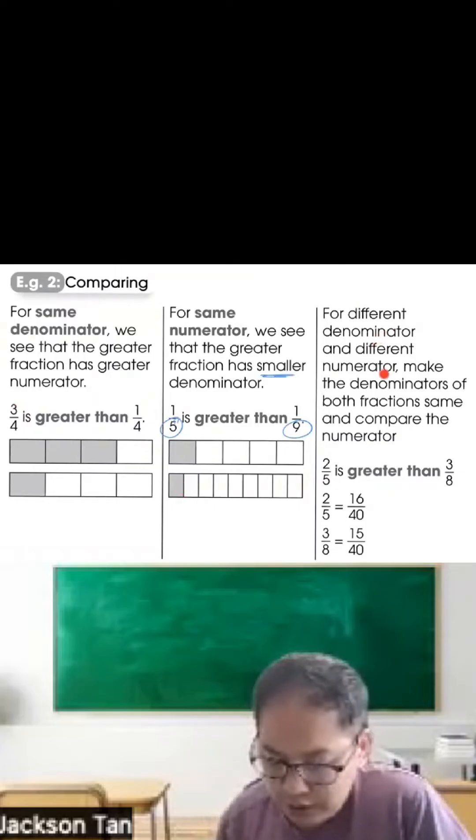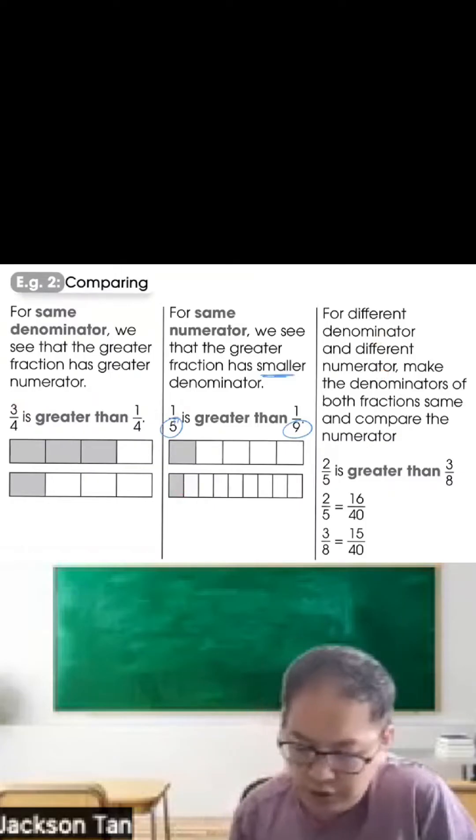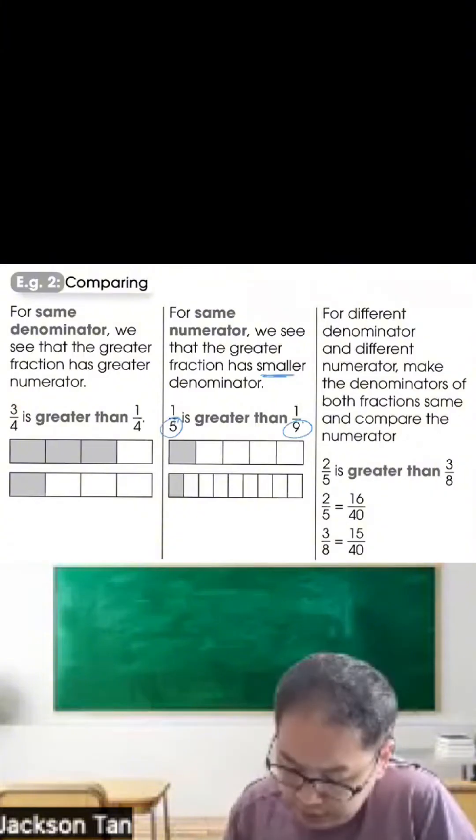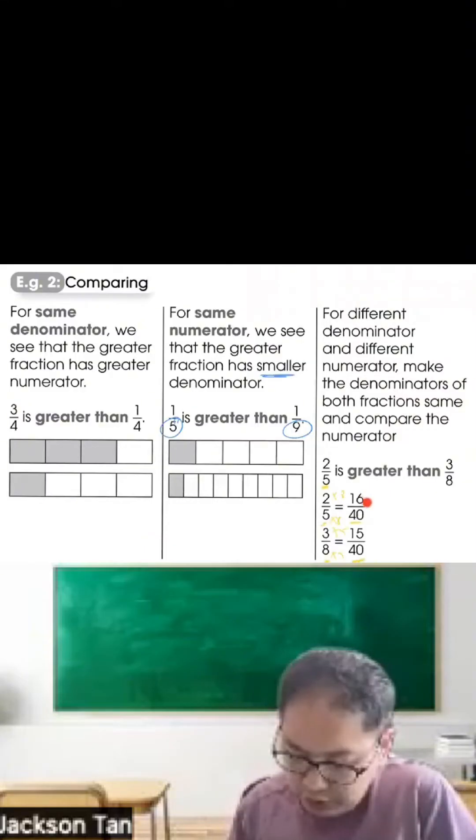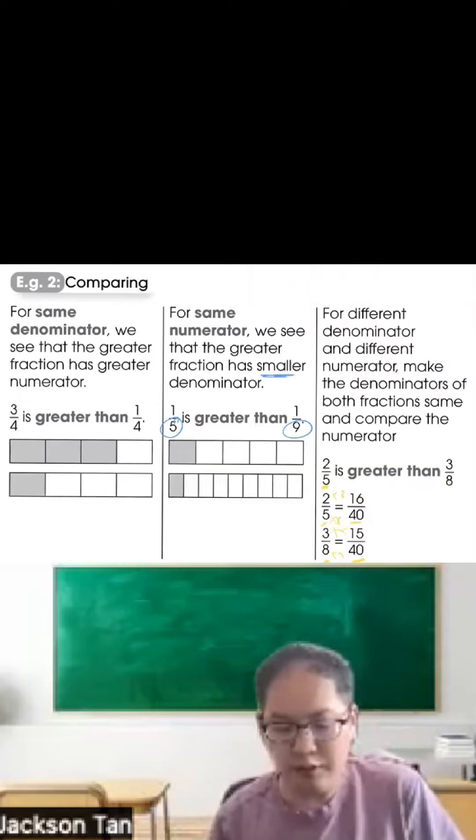If the denominator is different and the numerator is also different, we make both denominators of both fractions the same and we compare the numerator. Like 5 times 8 gets 40, and 8 times 5 gets 40. Then we compare. You can see 16 is greater than 15, so 2 out of 5 is greater than 3 out of 8.